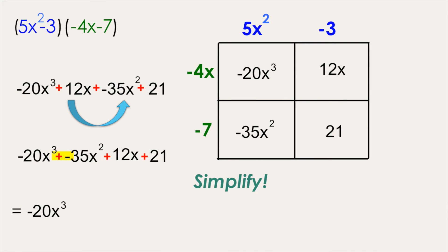Plus a negative can be rewritten as negative 35x squared. 12x is already simplified. It can just be brought down as well as 21. We have no more like terms, so this is our final answer.